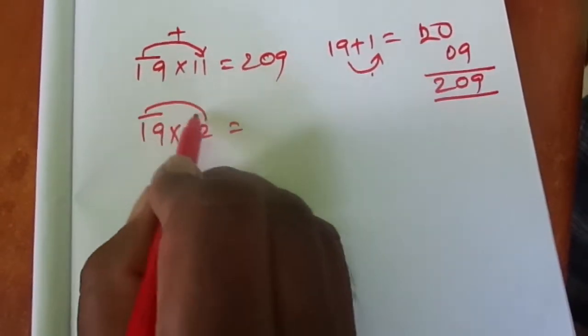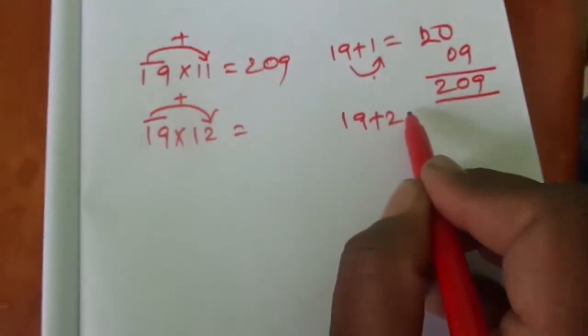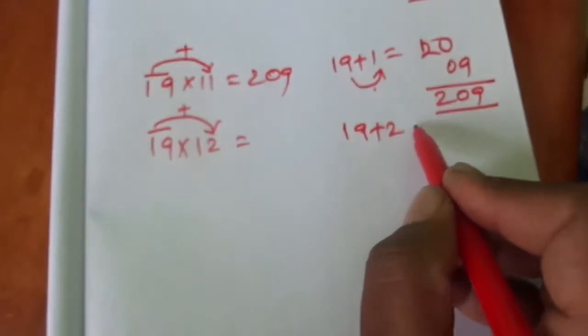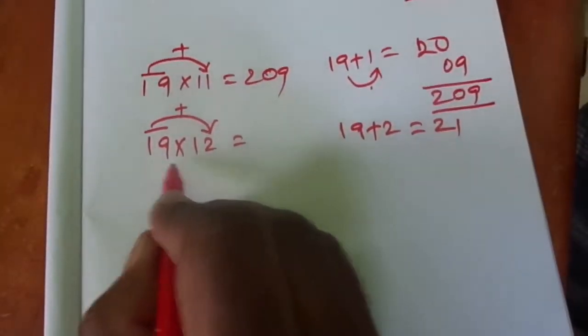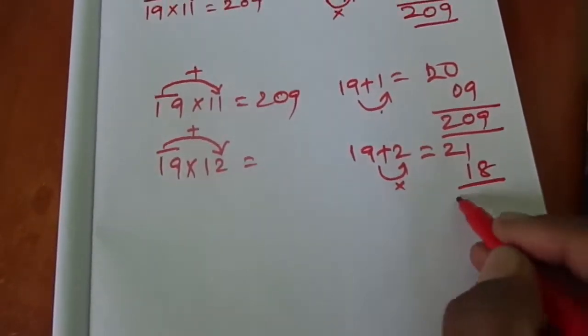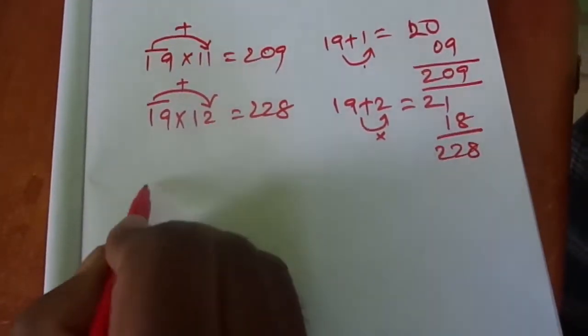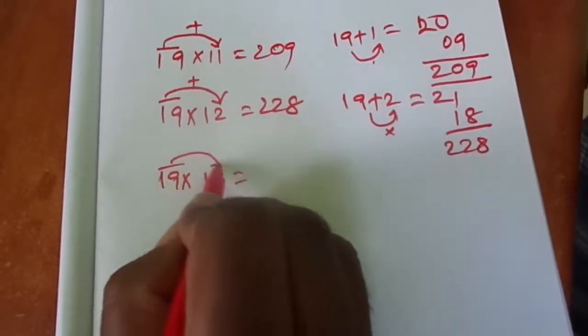19 × 12: 19 plus 2, answer is 21. 9 multiplied by 2 is 18. If you add 21 and 18, you got 228.